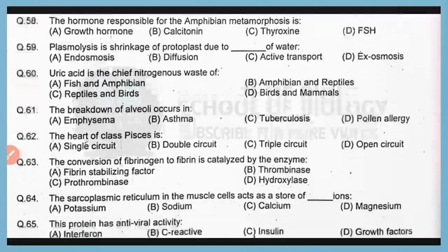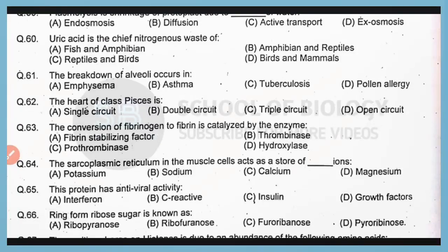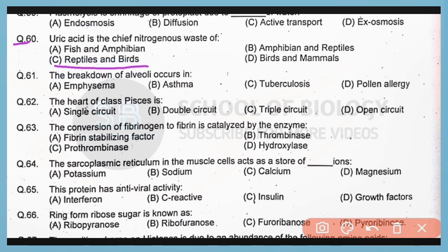Question number 60. Uric acid is the chief nitrogenous waste of reptiles and birds. So correct answer is option C.